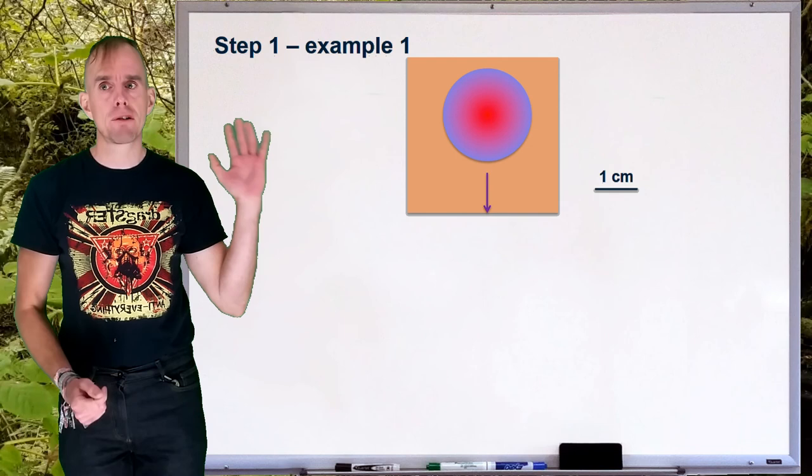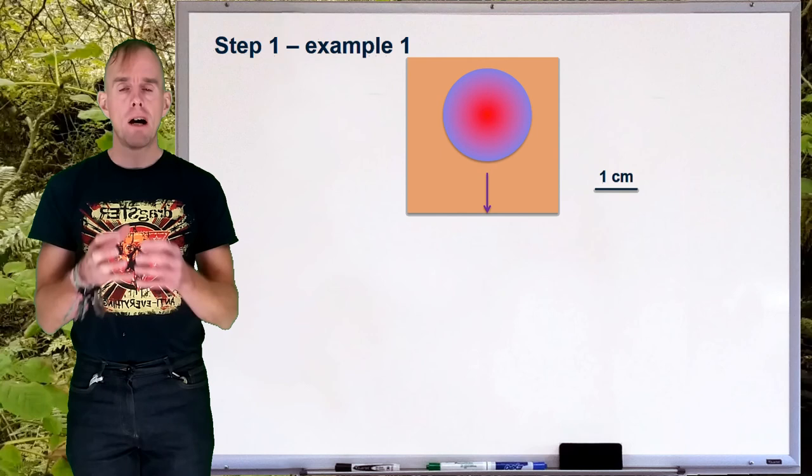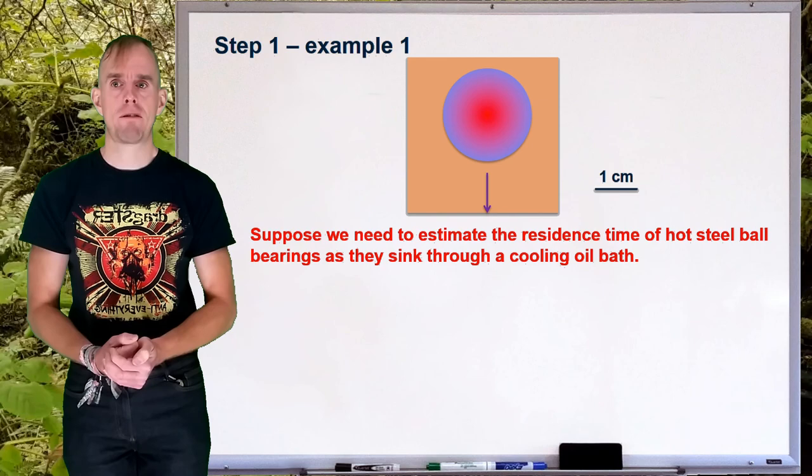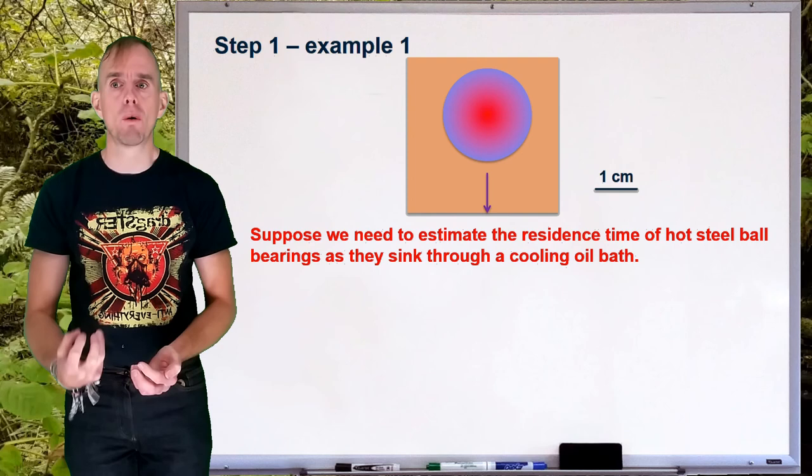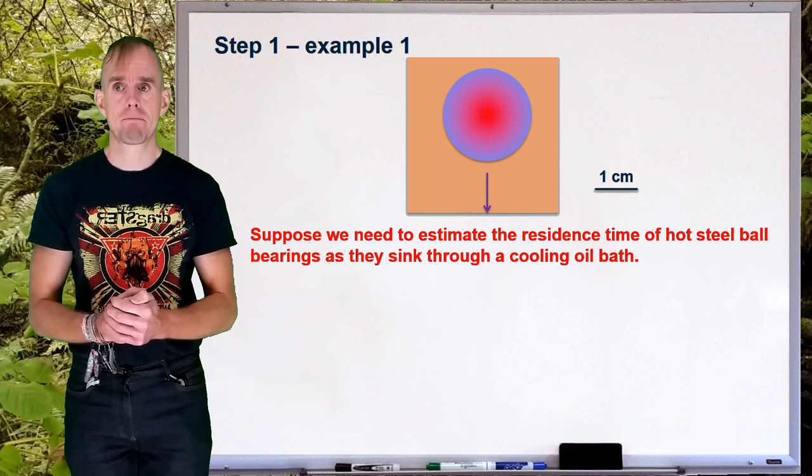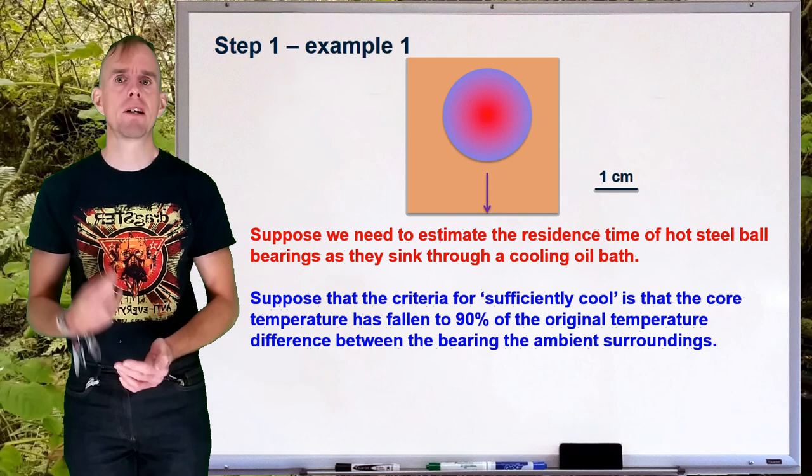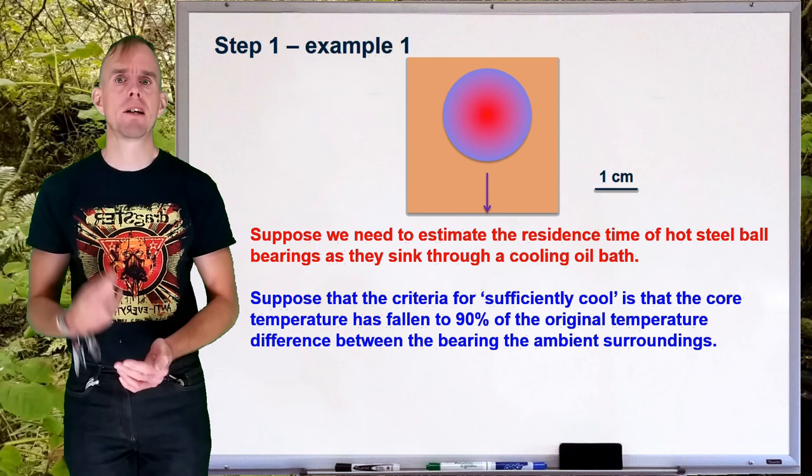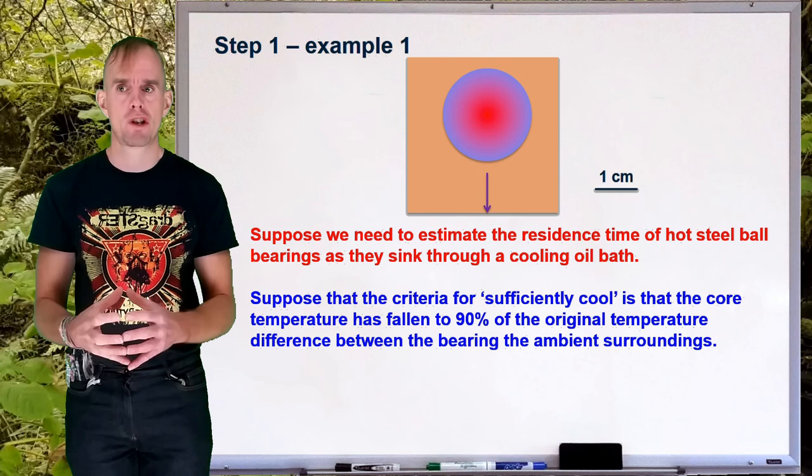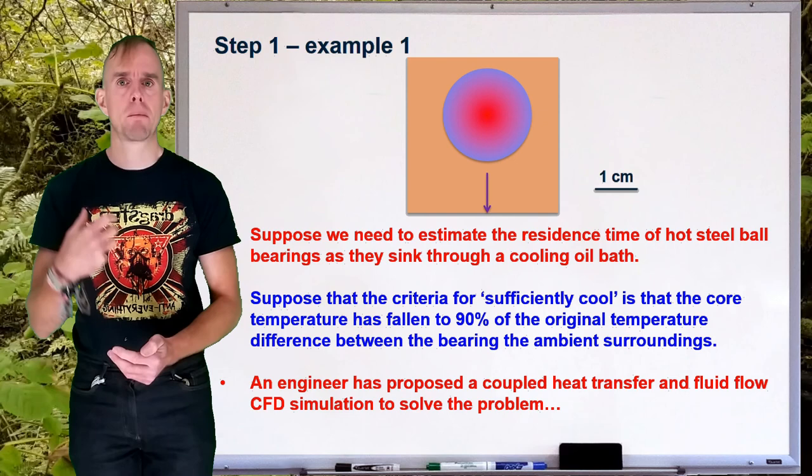Now, on the whiteboard in front of you, I've put a schematic diagram of a hot ball bearing. So, what we want to do is to cool this ball bearing down. Let's suppose this ball bearing is made of steel and we're going to drop it through a cool oil bath, such that the core of the bearing becomes colder. Let's say that our criteria for the bearing being sufficiently cool enough is that the core temperature has fallen to 90% of the original temperature difference between the bearing and the ambient surroundings. Let's also think that we might be able to do this as a coupled heat transfer and fluid flow problem within a multi-physics CFD package.